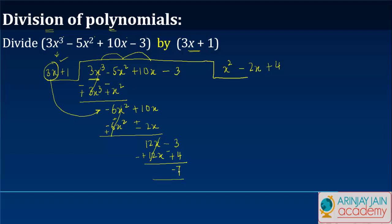Now, minus 7 is lesser in degree in terms of this x variable, so we will stop over here. So, effectively, when we divide this polynomial by 3x plus 1, we get x square minus 2x plus 4, and the remainder is 7. And that's your answer.